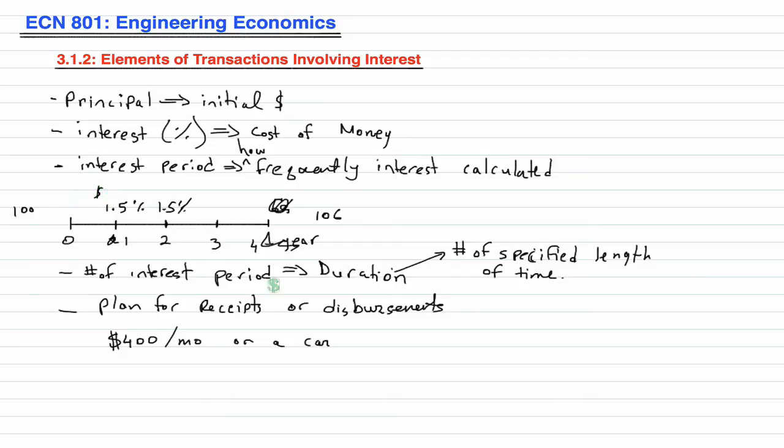What is the plan? It'd probably be one dollar fifty cents per specified length of time. So in each specified length of time we have a dollar fifty. So plan for receipts or disbursements basically yields a particular cash flow pattern. The pattern here is that you're paying one dollar fifty every specified length of time or every period.